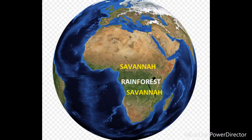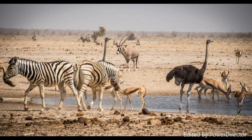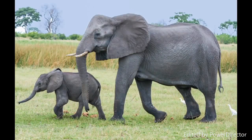Parrots, toucans, monkeys, and crocodiles are just a few inhabitants of these rainforests. To the north and to the south of the rainforest regions, there is a wide belt of savannah. The savannah consists of large, open, dry, grassy plains with some trees. In the savannah there are lions, zebras, and elephants, along with many other species of animals.